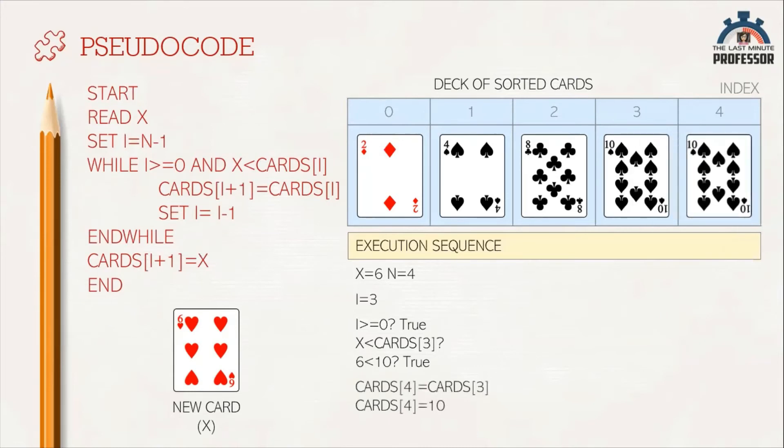Here, cards[4] equals cards[3]. One thing we have to note: if we have an equal sign, the value at the right side gets assigned to the variable on the left side. That's why cards[4] takes the value of 10. Now, decrement i by 1. We are moving to the previous index. i equals 2.